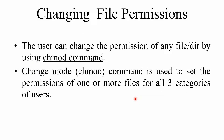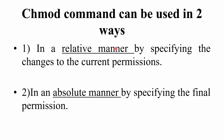A user can change the permission of any file or directory by using the chmod command, termed as change mode. chmod is used to set the permission of one or more files for all three categories of users: owner, others, and group. The chmod command can be used in two ways: in a relative manner by specifying changes to the current permission, and in an absolute manner by specifying the final permission.